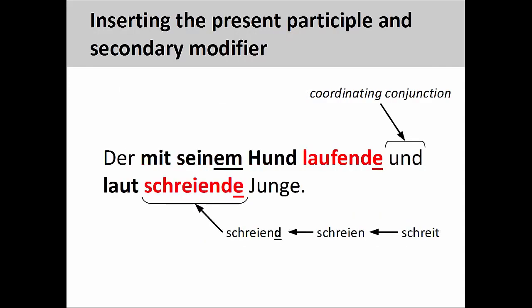Finally, there is one remaining verb, schreit, yells, and adverb, laut, loudly, for us to deal with. Although they are not included in the relative clause, they still describe activity performed by the subject of the sentence and therefore can be included as components in the extended modifier. I will follow the same steps: first, I will bring over the present participle. To form the present participle, take the conjugated verb, form its infinitive, and attach a -d suffix to the infinitive. This creates the present participle schreiend, yelling. Since the participle now functions as an attributive adjective, I need to add the appropriate weak endings for a masculine noun in the nominative case. Once this is done, I can bring over the adverb laut, loudly, and insert it before the participle it modifies. Both participial phrases can now be joined with the coordinating conjunction und, and.